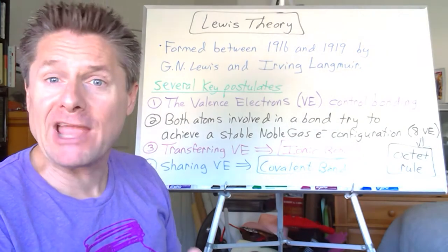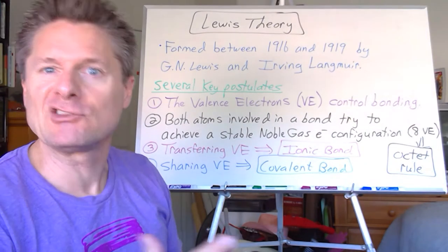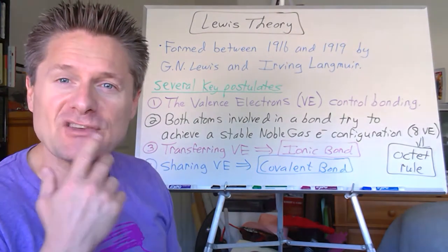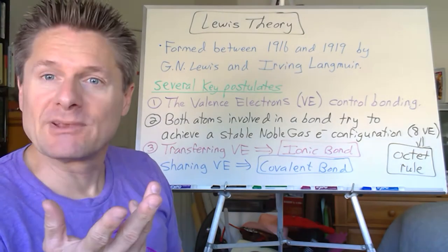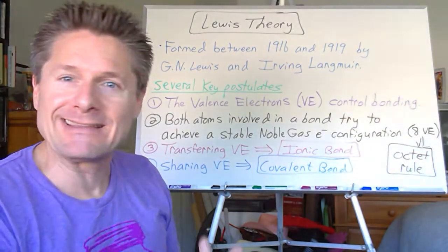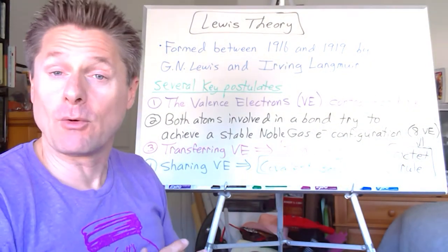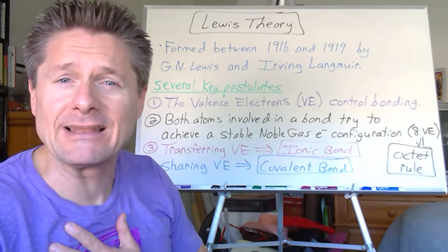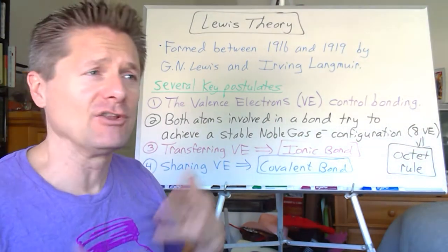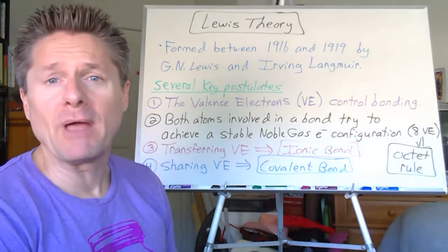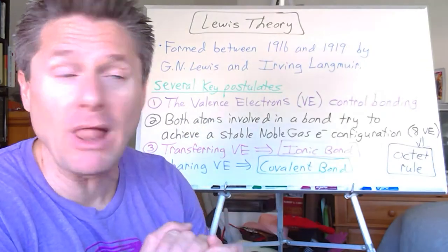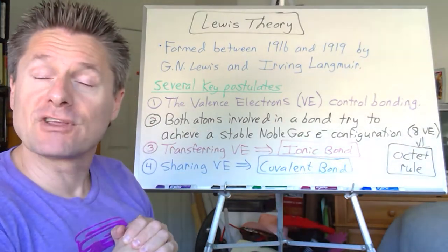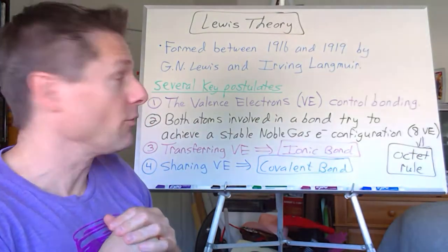Valence electrons control the bonding. Now, that's an oversimplification — with transition metals, lanthanides, actinides, there are exceptions where D electrons and inner electrons get involved. But for most of the bonding we'll deal with, we'll use the main group elements — the S block and P block — and the valence electrons are the main ones that control the bonding.